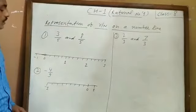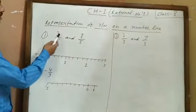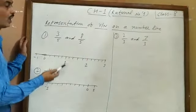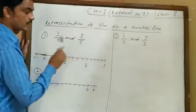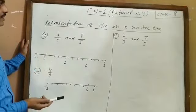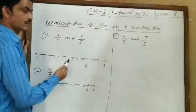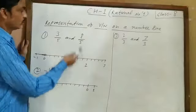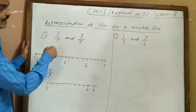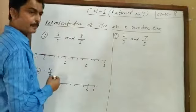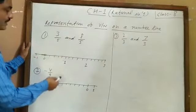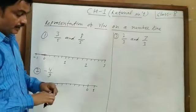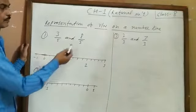Good morning students. Today our topic is representation of rational numbers on a number line. We will learn how to represent a rational number on a number line. As in earlier classes, you already know how we represent a whole number and an integer on a number line. Today we discuss rational numbers, and a rational number may be negative or positive.